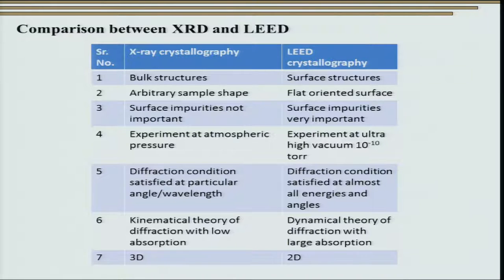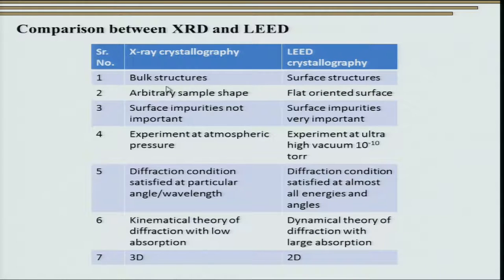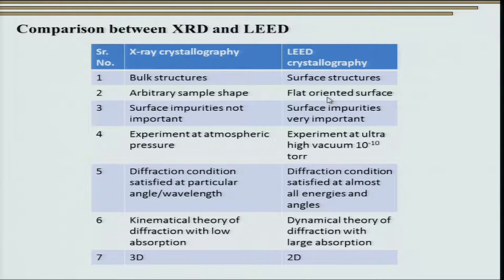Let us compare x-ray crystallography with LEED crystallography. X-ray crystallography essentially deals with bulk structures, while LEED crystallography deals with surface structures. X-ray crystallography can be used even to get information about surfaces, but its major focus is on bulk structures. Unlike x-ray crystallography, which does not require a particular sample preparation, LEED requires extremely flat and oriented surfaces. Surface impurities generally do not play an important role in x-ray crystallography, while they are very important in LEED crystallography.